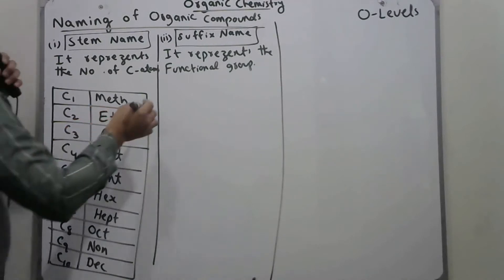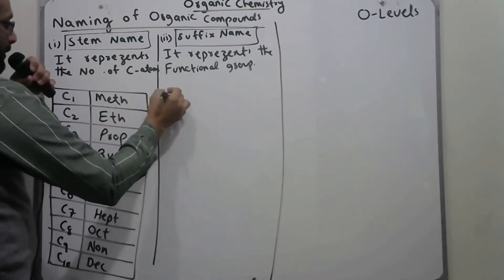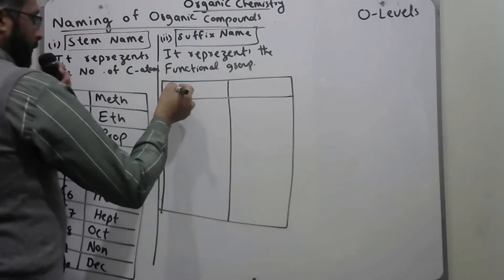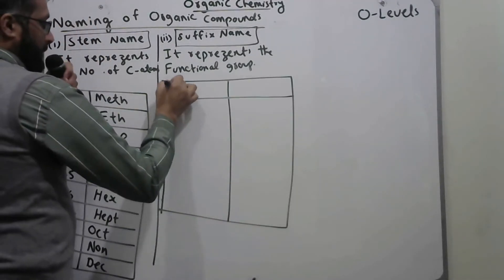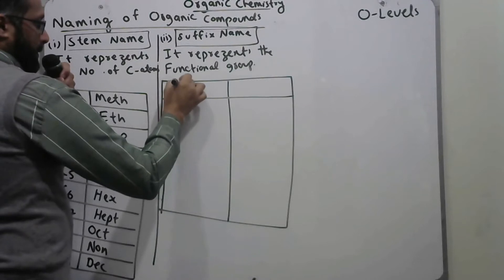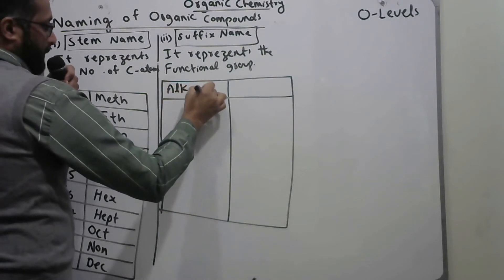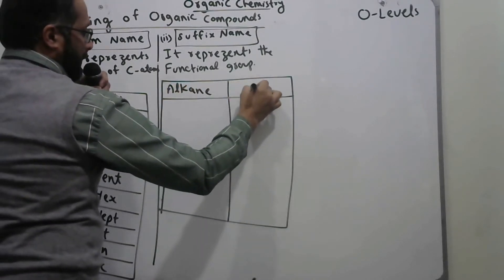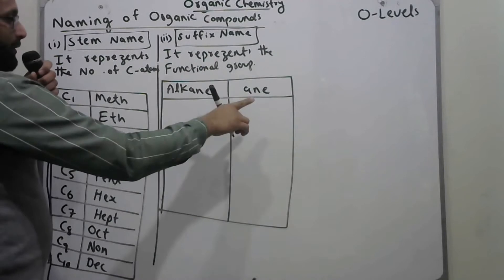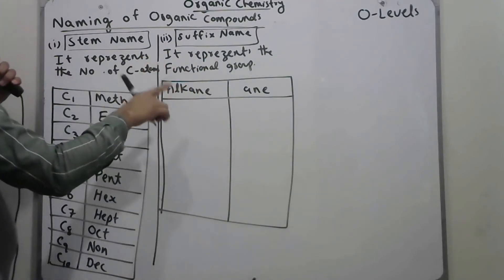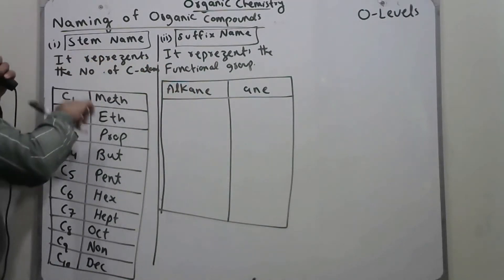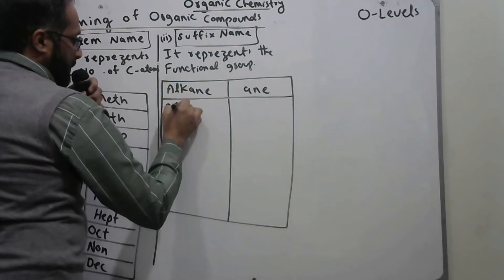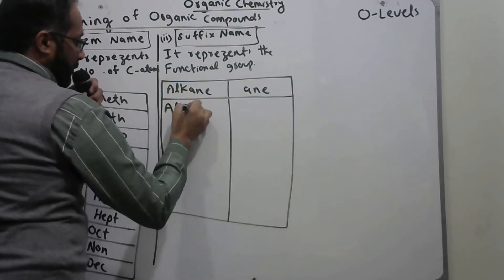For any organic compound, naming can be done easily. For alkanes, we write the suffix name 'ane', which is placed at the end of the stem name.